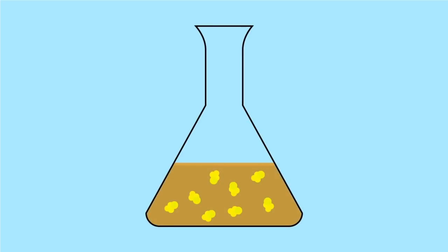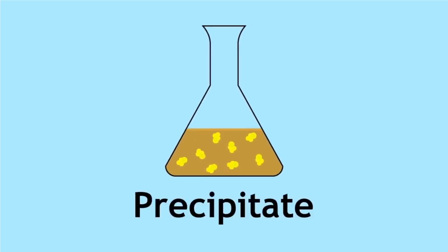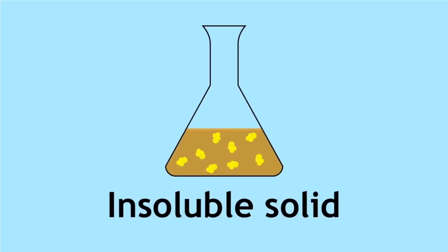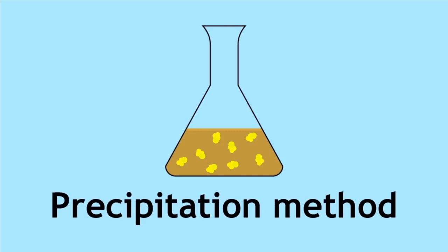This bright yellow solid is known as a precipitate, which is an insoluble solid formed from combining two solutions. This is known as the precipitation method.